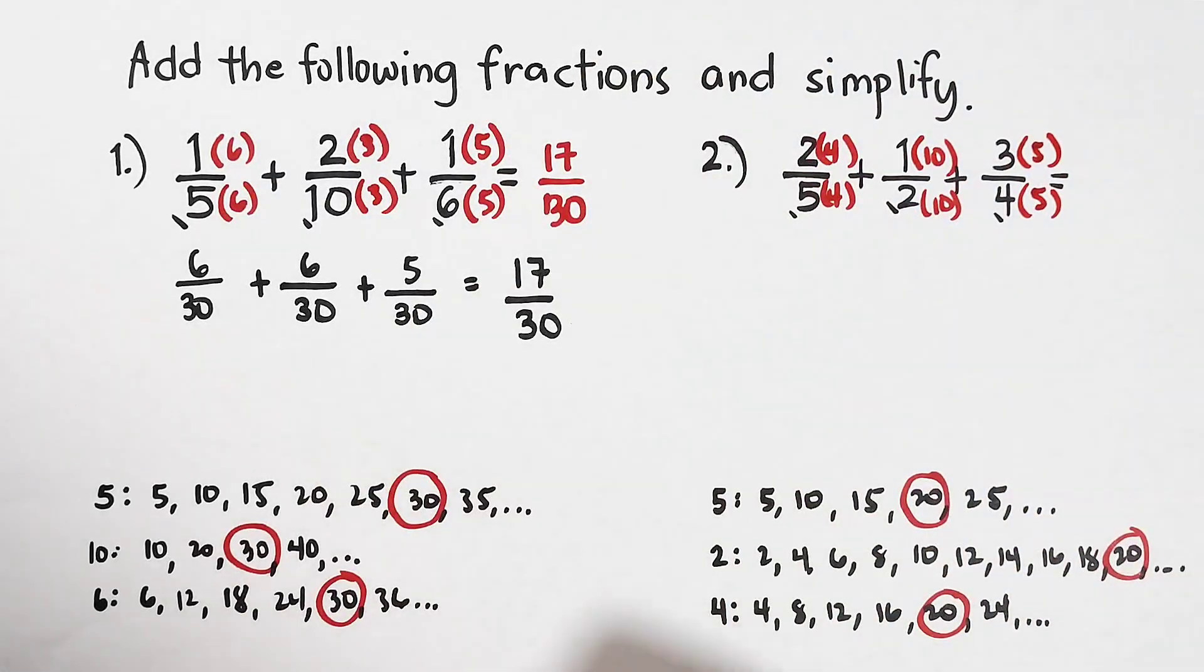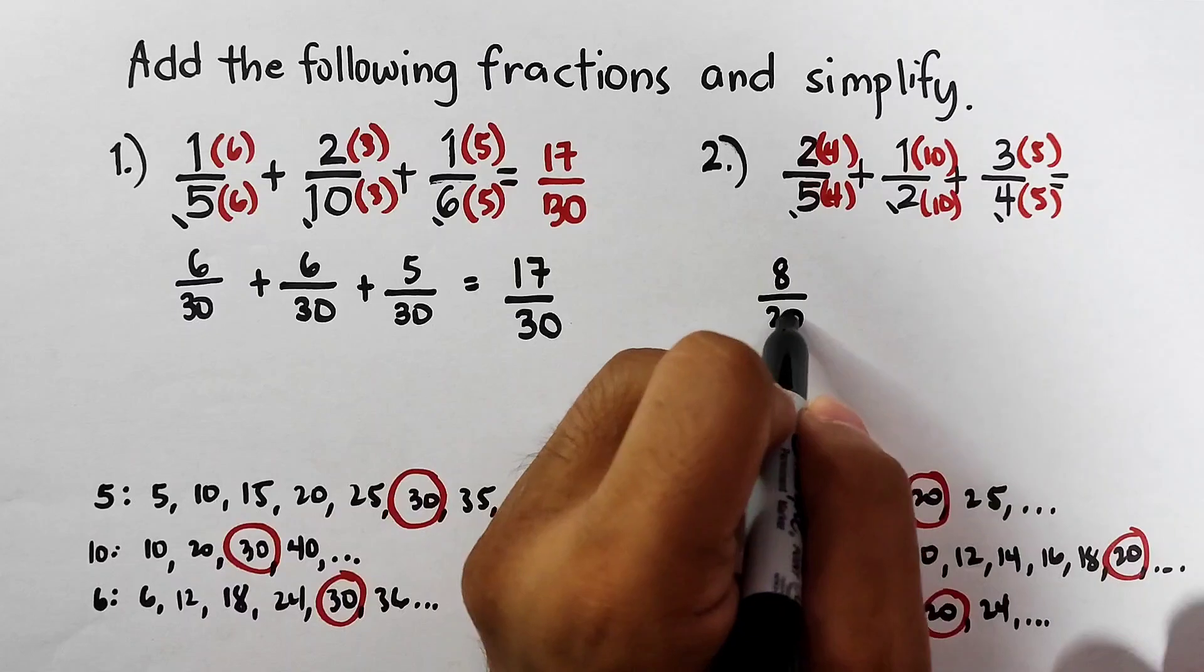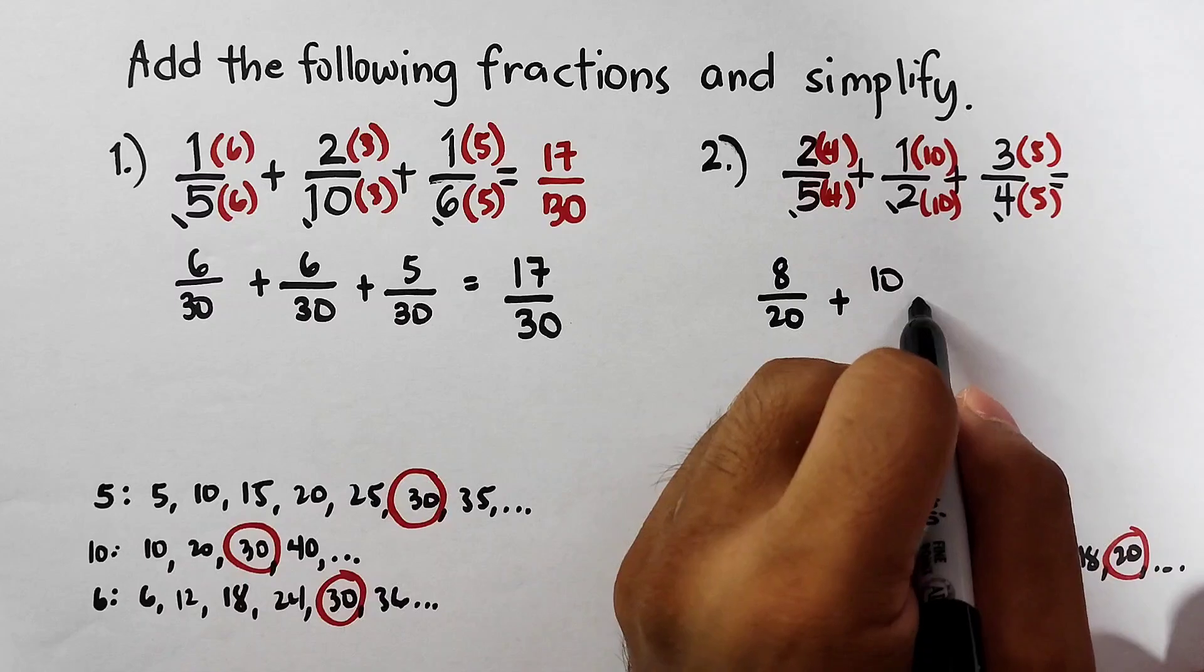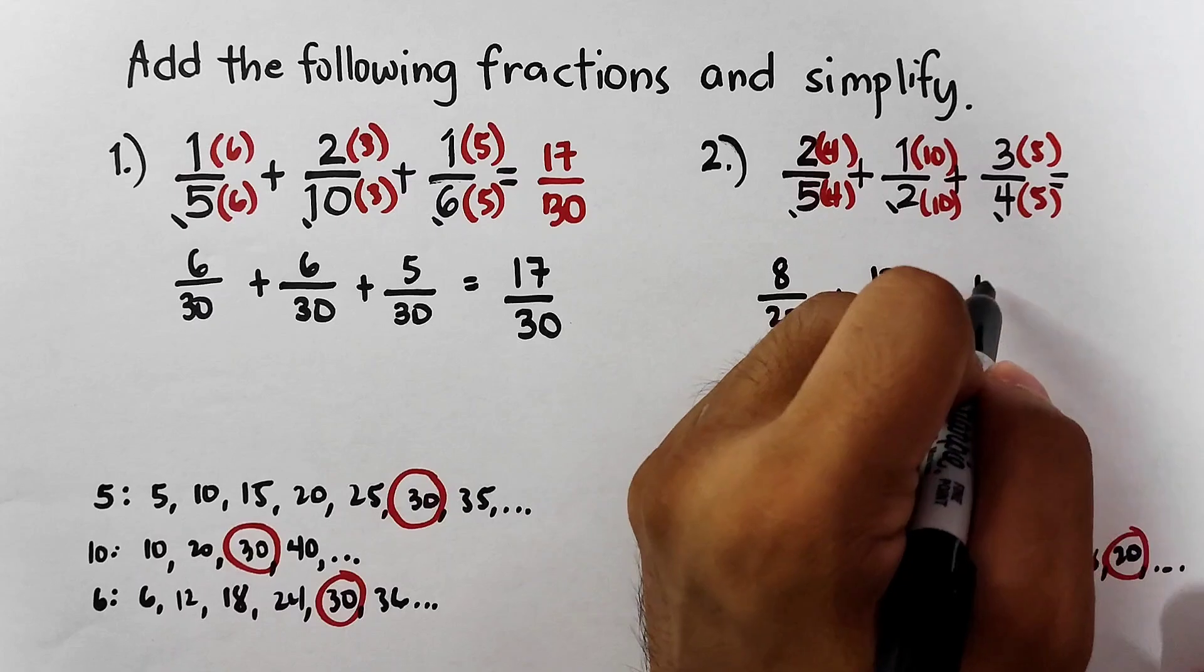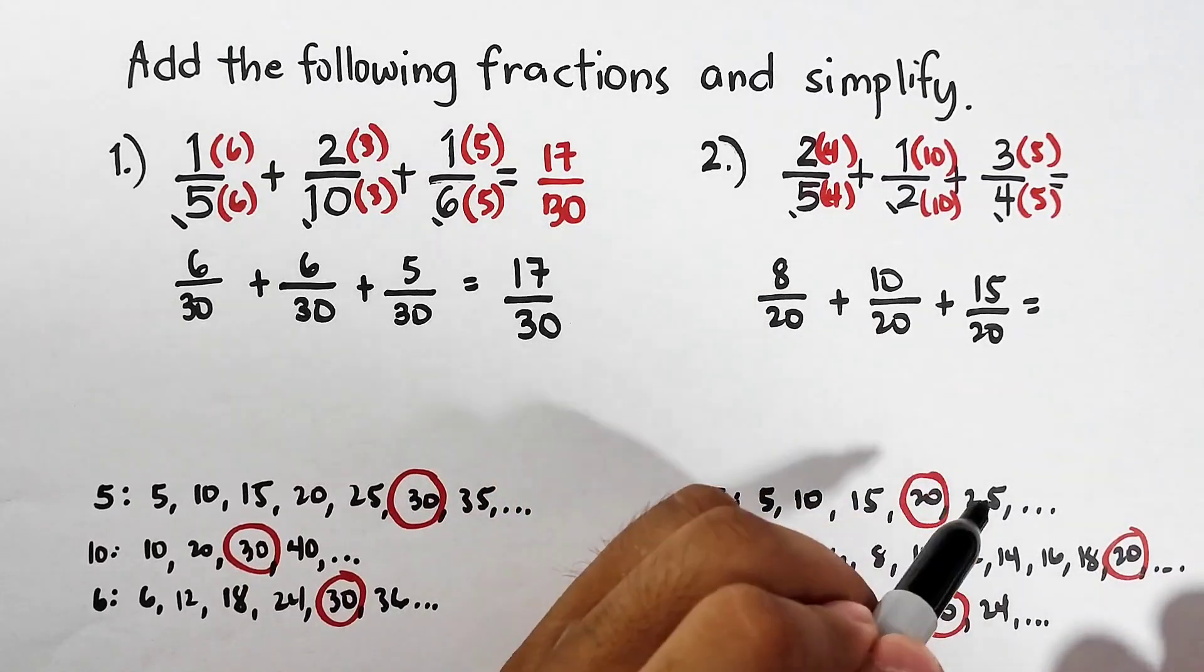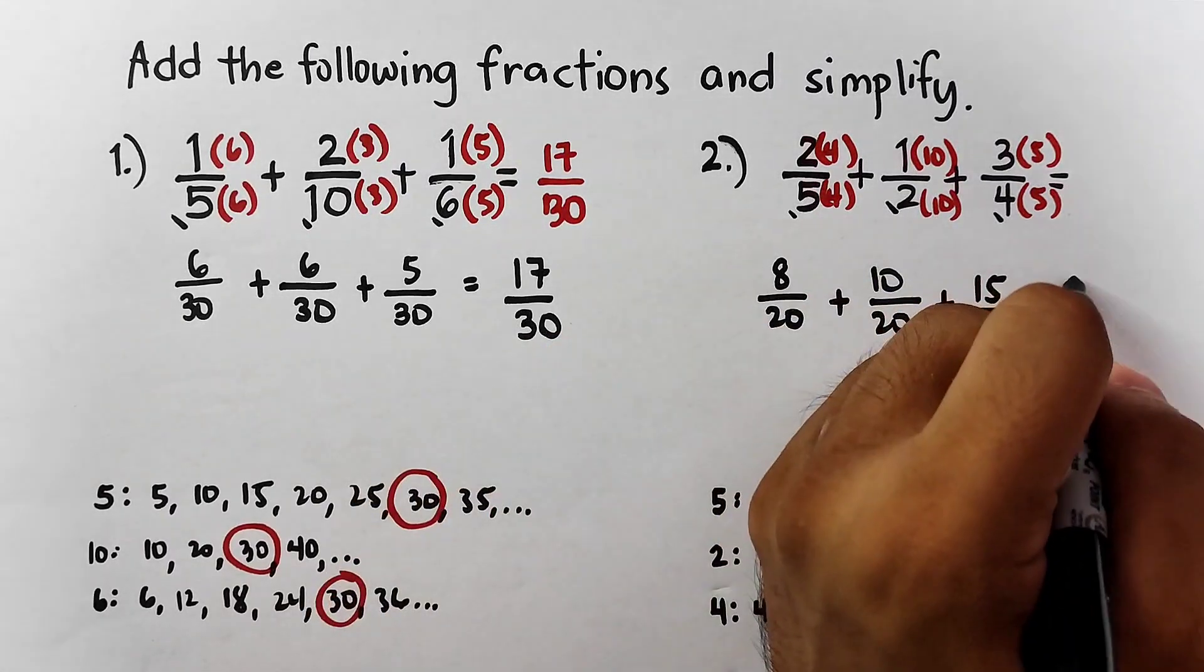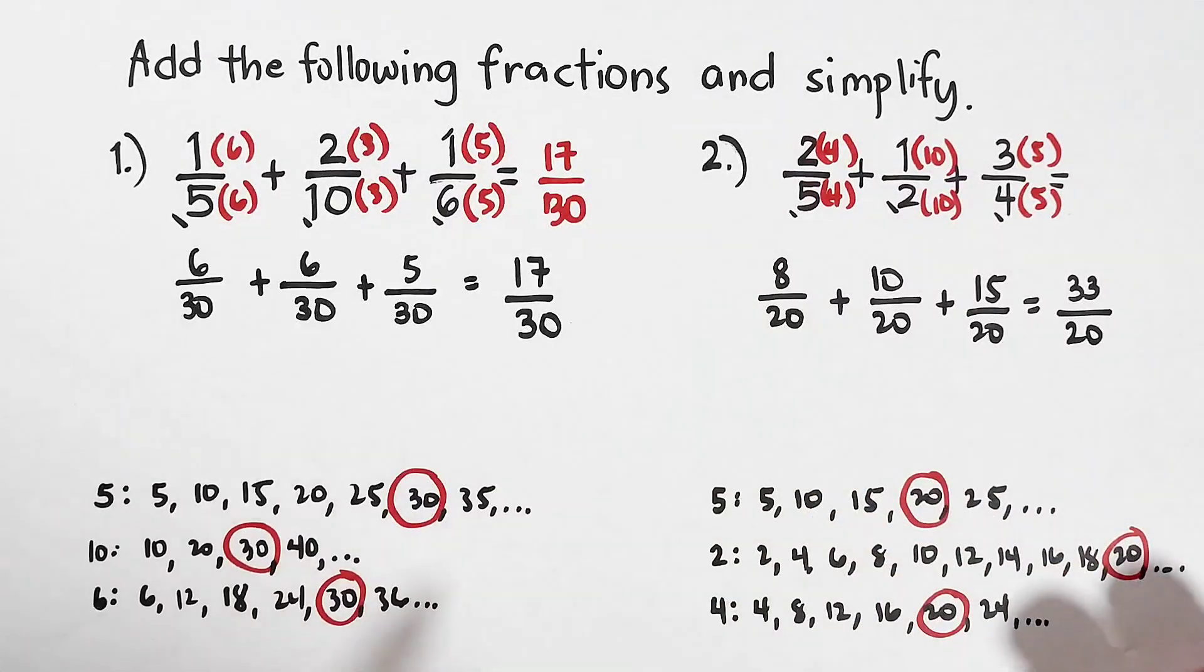Now let's solve them: 2 times 4 is 8 over 20, plus 10 over 20, plus 3 times 5 is 15 over 20. As you can see, add them since they have the same denominators.